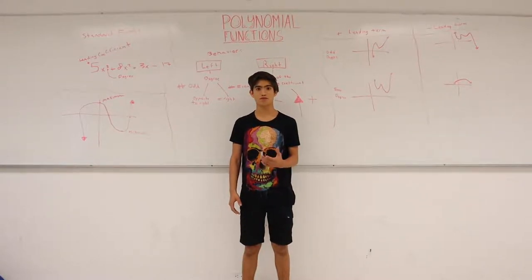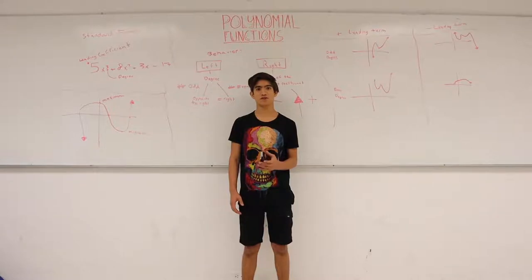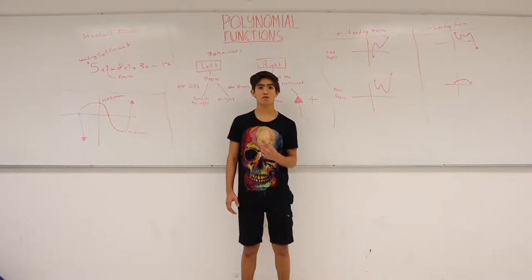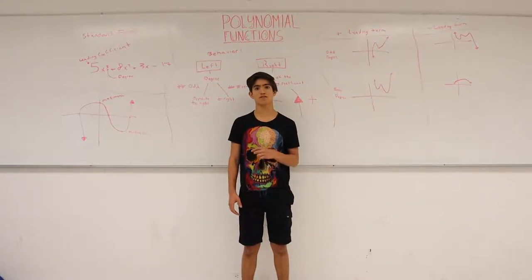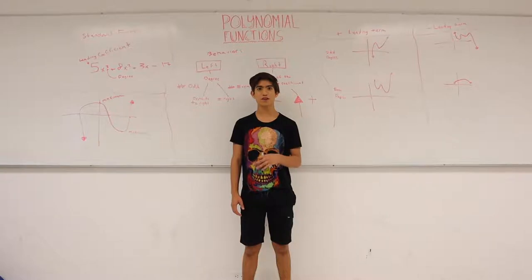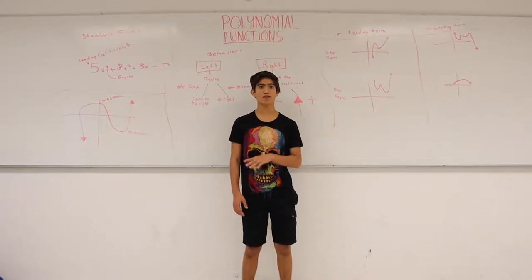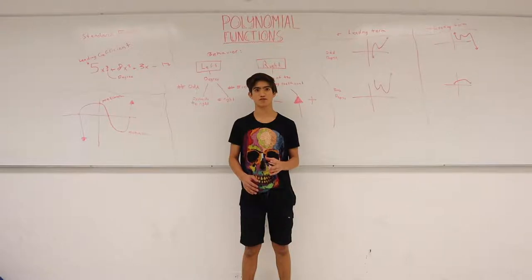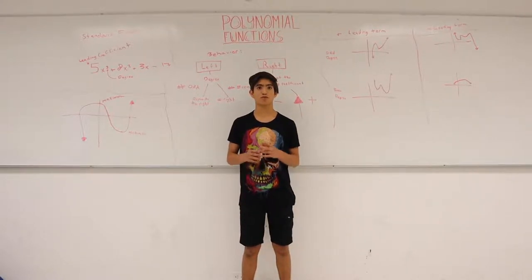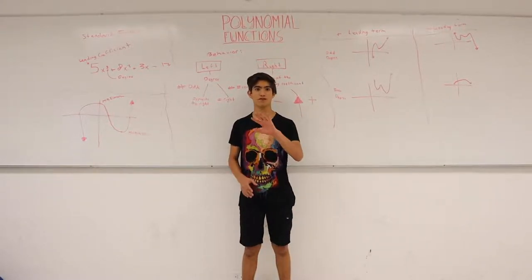Constant, where its degree is zero; linear, when its degree is one; quadratic, when its degree is two; cubic, when its degree is three; and quartic, when its degree is four. There are much more complex polynomial functions depending on their degree, but we are going to focus just on these five functions.